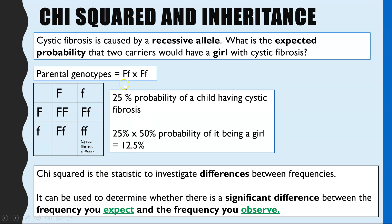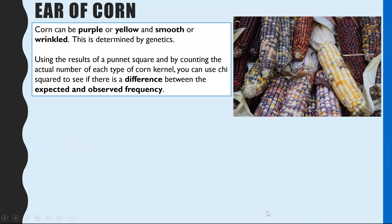First you would use your Punnett square to work out the frequency you expect to see, then you record what you actually observe, and then we do the statistic to see if there is a significant difference between the expected and the observed. I'm going to go through a whole example — this is the one I always do each year with students at my school.